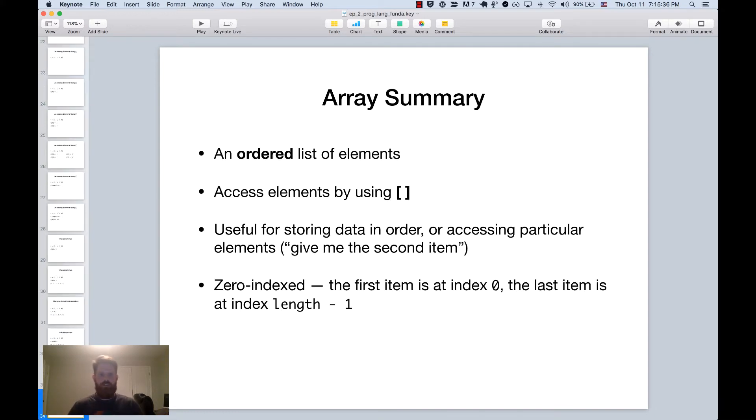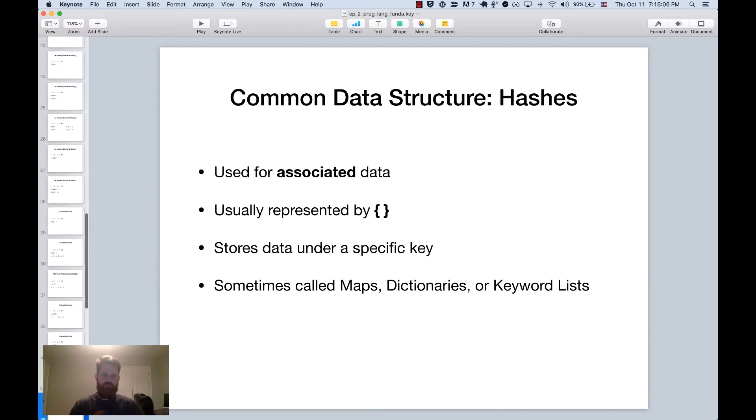Okay so a summary for arrays. Arrays are an ordered list of elements. You can access and create arrays by using these square brackets. They're useful for storing data in order or for accessing a particular element. So give me the first item, give me the second item. They are zero indexed. So the first item is at index zero and the last item is at index length minus one. So in our example we saw that the length was four but the last item was at index three.